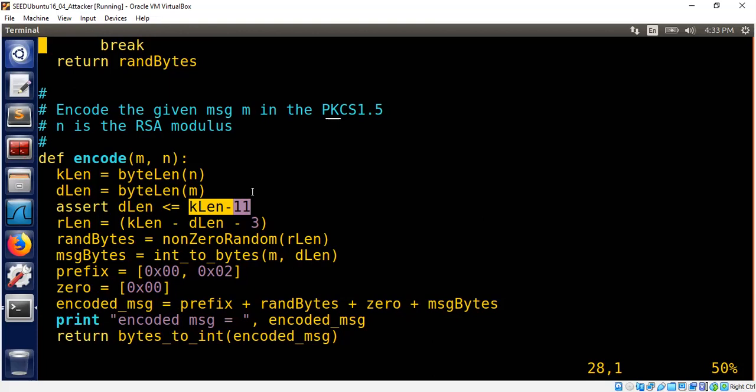That's the reason why the data cannot have length more than k length minus 11. It has to be less than that. So that means you can find out how many random bytes do I have to generate. And then I go ahead and generate that many random bytes.